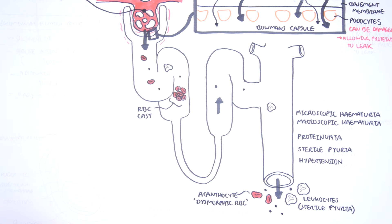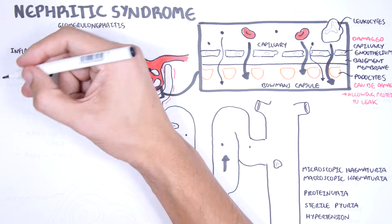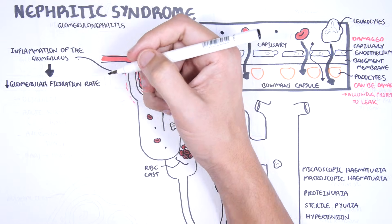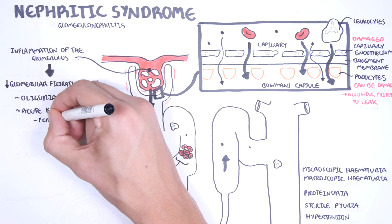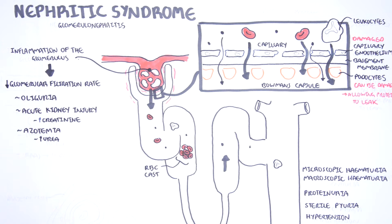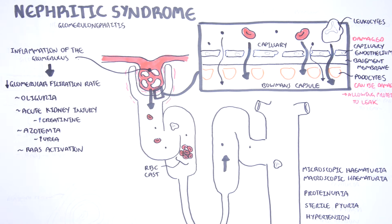It's sterile pyuria. The inflammation that occurs in the glomerulus reduces the glomerular filtration rate, reducing fluid passing through, causing oliguria, and also causing an acute kidney injury with elevated creatinine. Further, the inflammation causes azotemia — retention of urea. Reduced glomerular filtration rate will stimulate the renin-angiotensin-aldosterone system, resulting in hypertension from sodium and water retention.